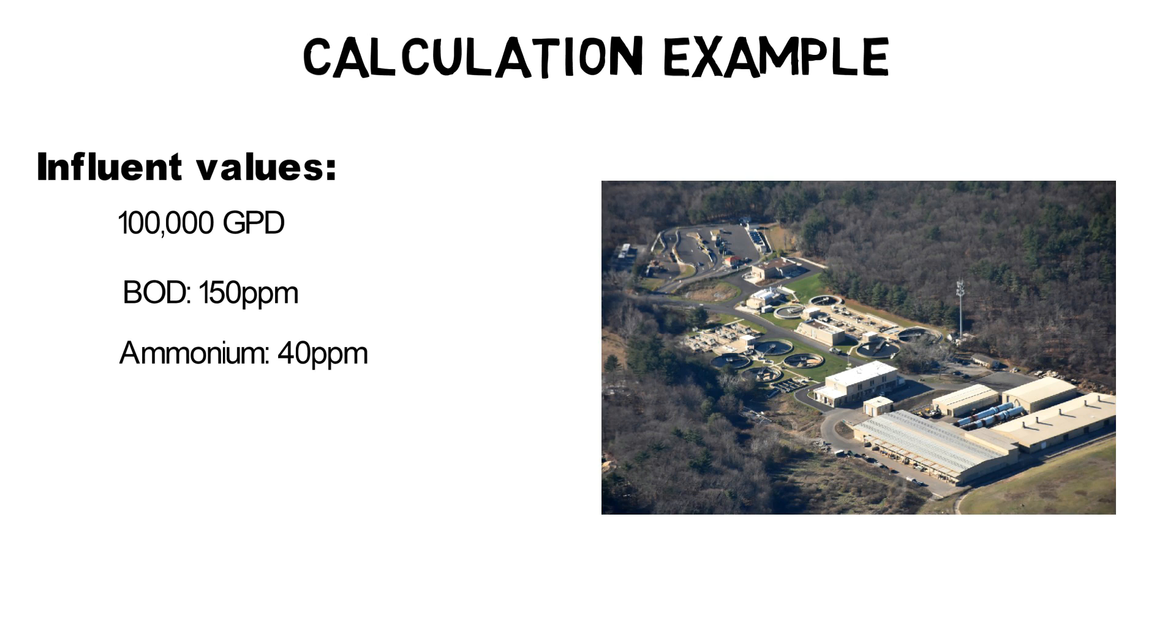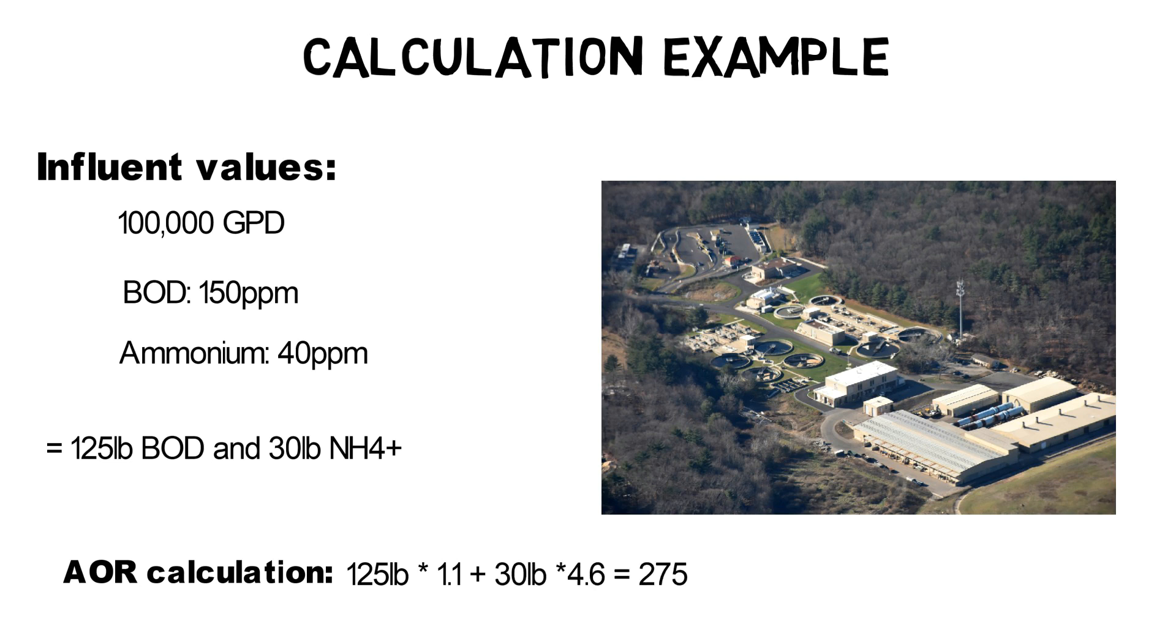The daily BOD loading is about 125 pounds per day and the daily ammonium loading is about 30 pounds per day. Therefore, the AOR per day is 125 pounds times 1.1 plus 30 pounds times 4.6 equals 275.5 pounds oxygen.